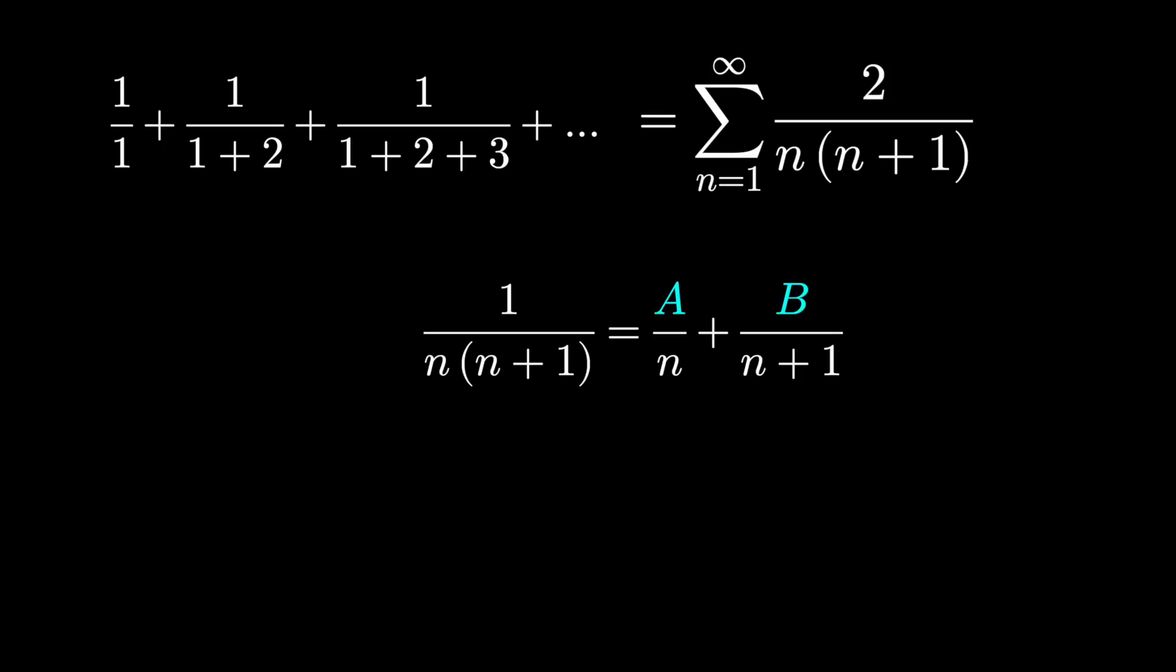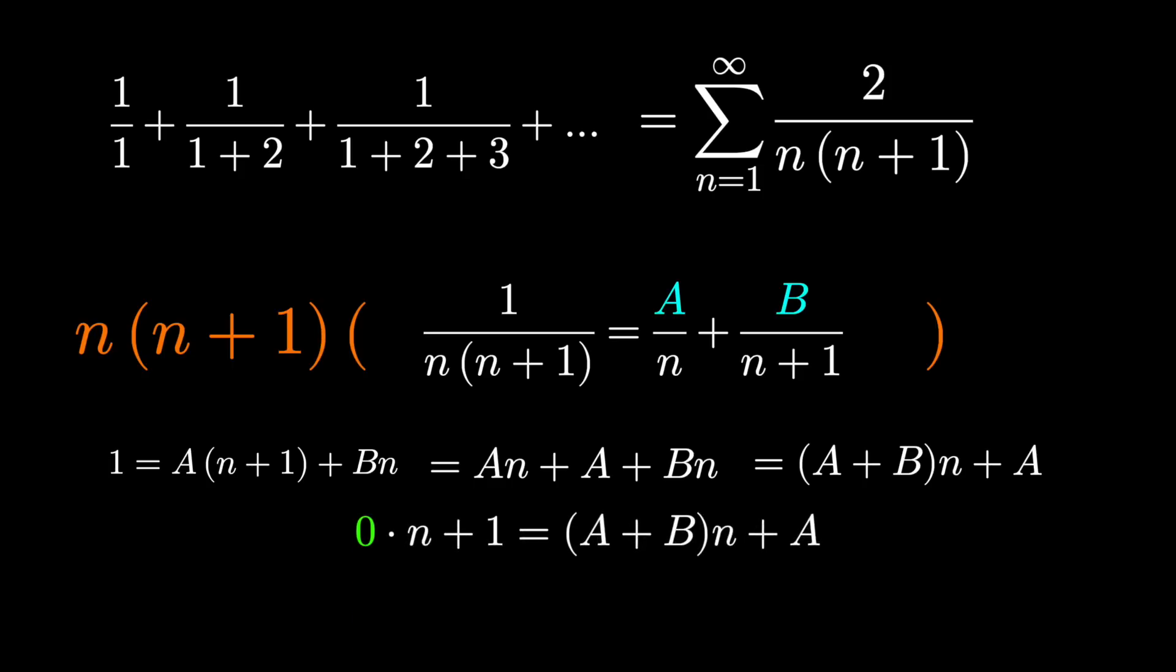I would probably multiply by the quantity n times n plus 1 to clear all the fractions. We can distribute and combine like terms. And here we do what's called matching coefficients. The coefficients on the left have to match the coefficients on the right. Doing that tells us that A has to be 1 and B has to be negative 1.